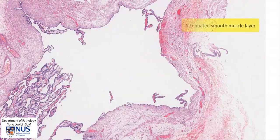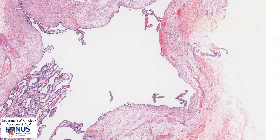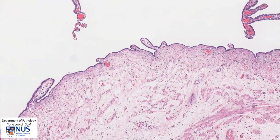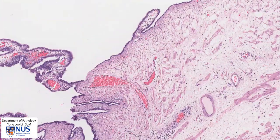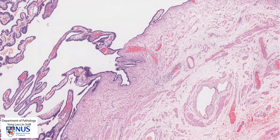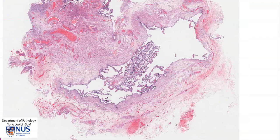The smooth muscle layer is attenuated, as you would see in hydrosalpinx that is prolonged, and there is also loss of the mucosal folds or plicae. In this particular fallopian tube we don't see any significant acute or chronic inflammation, however it can sometimes be present in cases of hydrosalpinx.